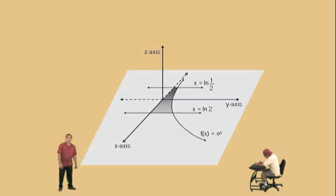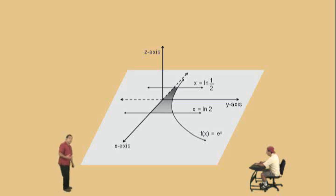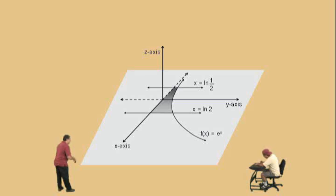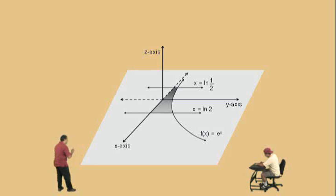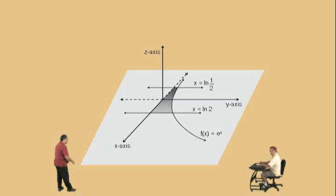Now, our manifold consists of two separate pieces whose volume can be found by generating semicircular cross-sections whose radii is equal to the length of partitions that are perpendicular to the x-axis and bounded between the x-axis and the function f of x equals e to the x.